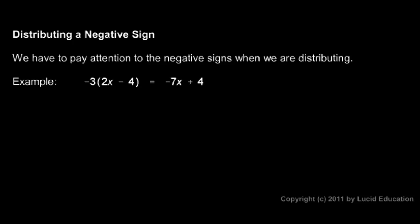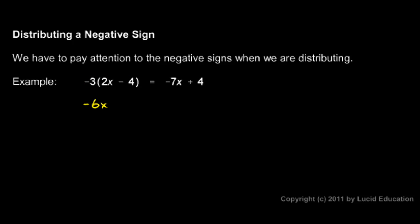On the left, I need to distribute this. The negative 3 has to be multiplied by the 2x and by this 4, but we have to remember that that's a negative 4. So first, let's multiply the negative 3 by the 2x. That gives me a negative 6x. Then I take this negative 3 and multiply it by that negative 4. Negative 3 times negative 4 is a positive 12. So the left side is negative 6x plus 12.